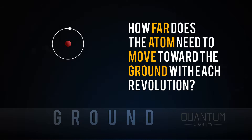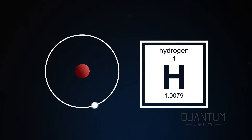For this episode, I want to know: how far does the atom need to move toward the ground with each revolution? For the electron, we will use the Bohr model of the single electron in the hydrogen atom in the first orbit.